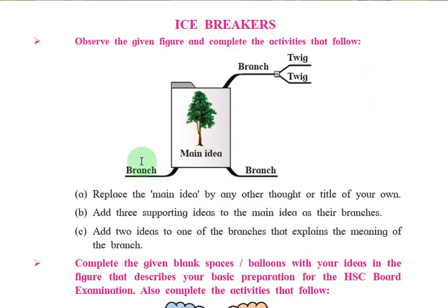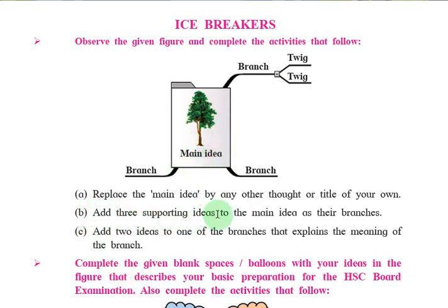This is one kind of tree diagram - a tree is given here and there are different kinds of branches, and the branches are divided into twigs. Now, our activity is to replace the main idea with any other thought or title of your own. Then add three supporting ideas to the main idea as branches. Afterward, add two ideas to one of the branches that explains the meaning of that branch.